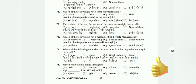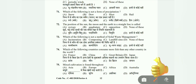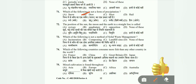Question 71: Which of the following is not a form of precipitation? Options: snow, dew, sleet, and hail. The correct answer is dew, which we call 'Oos'. Dew is not precipitation.